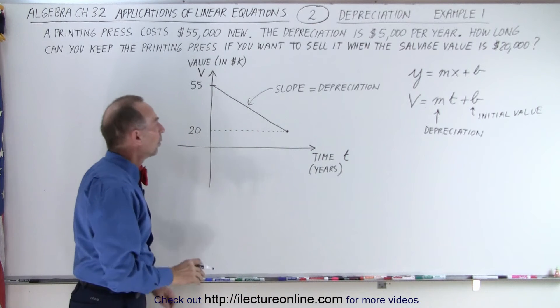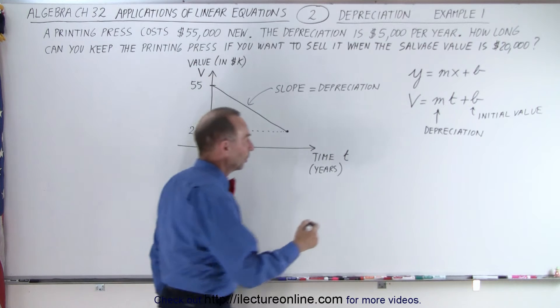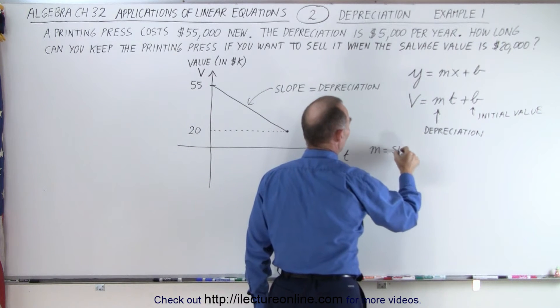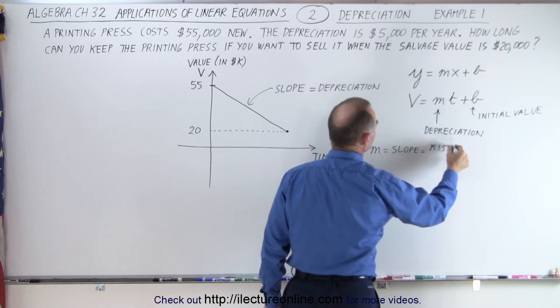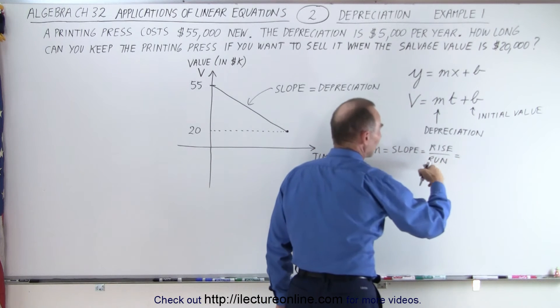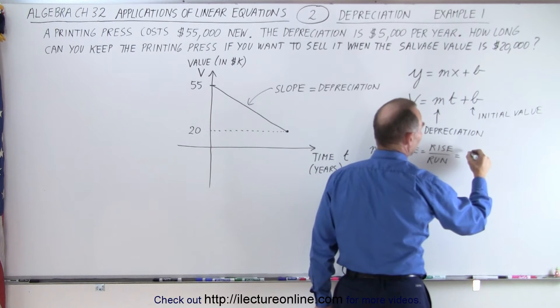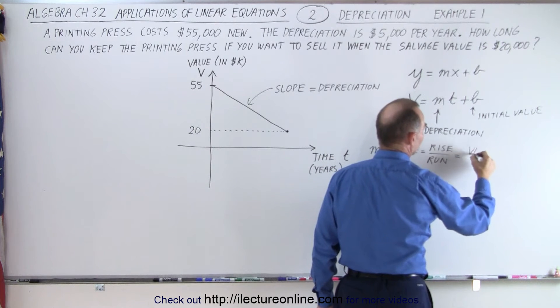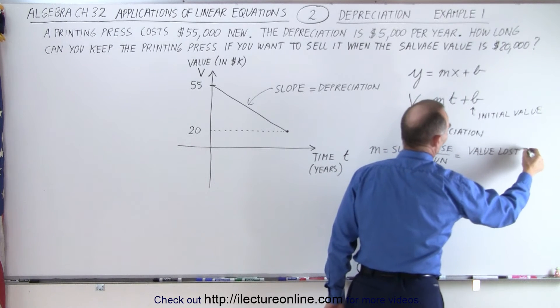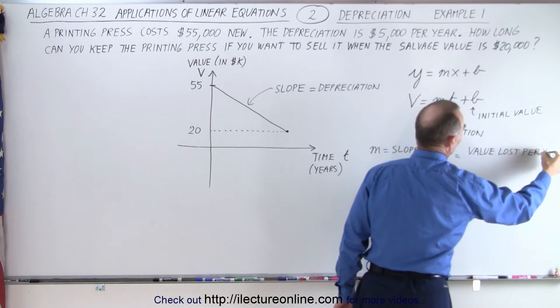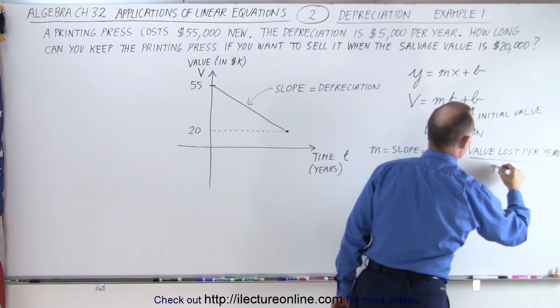Now what we can do here is we can define the slope. So we can say that the slope m, which is equal to the rise over the run. And of course, the rise is going to be negative rise, and it's going to be the lost value per year. So value lost per year, which is going to be a negative quantity, divided by the time.